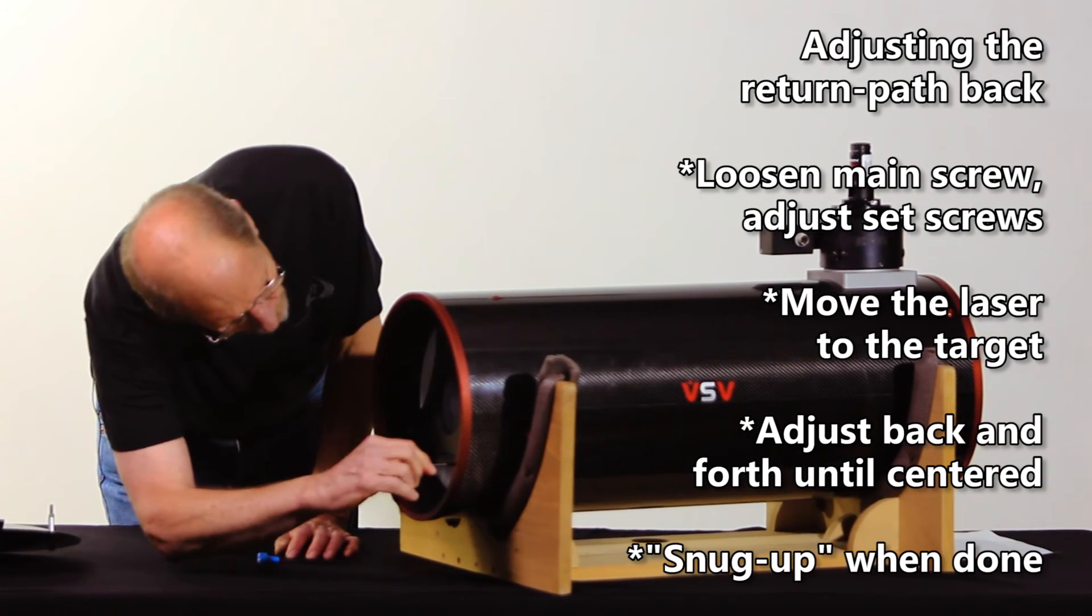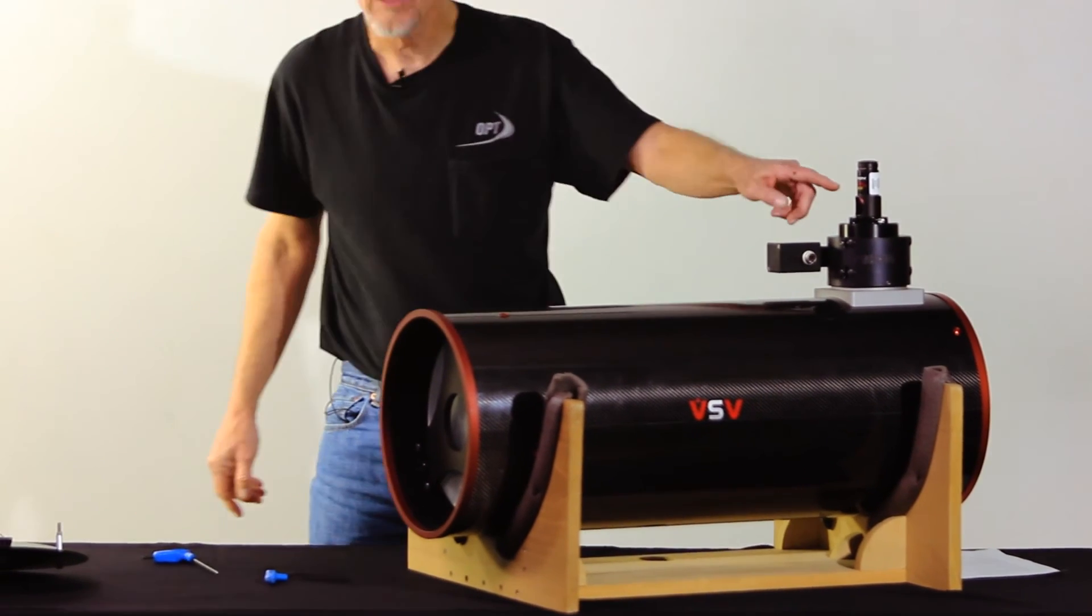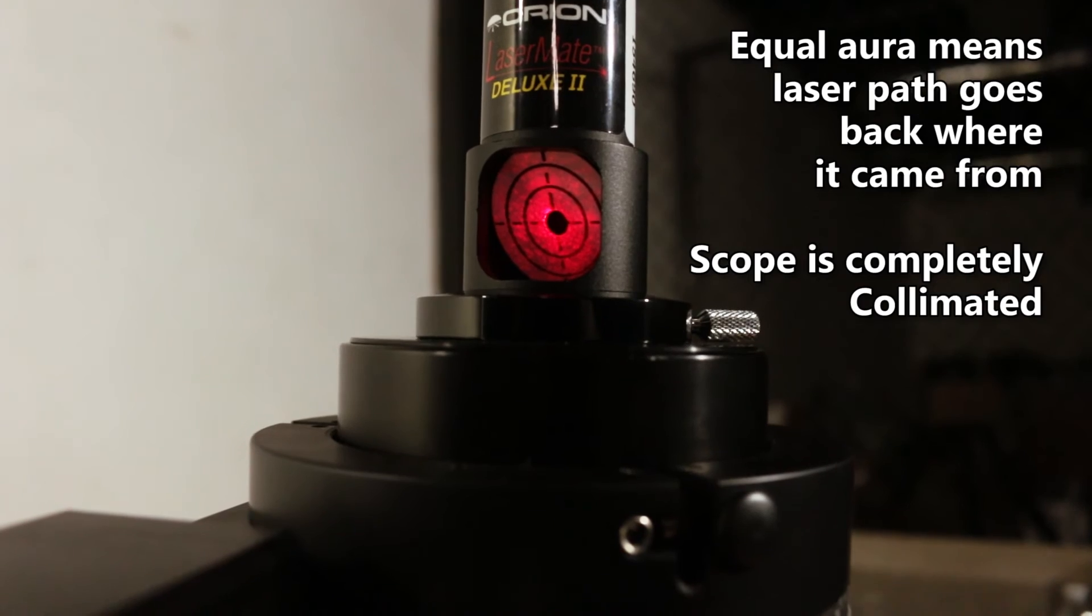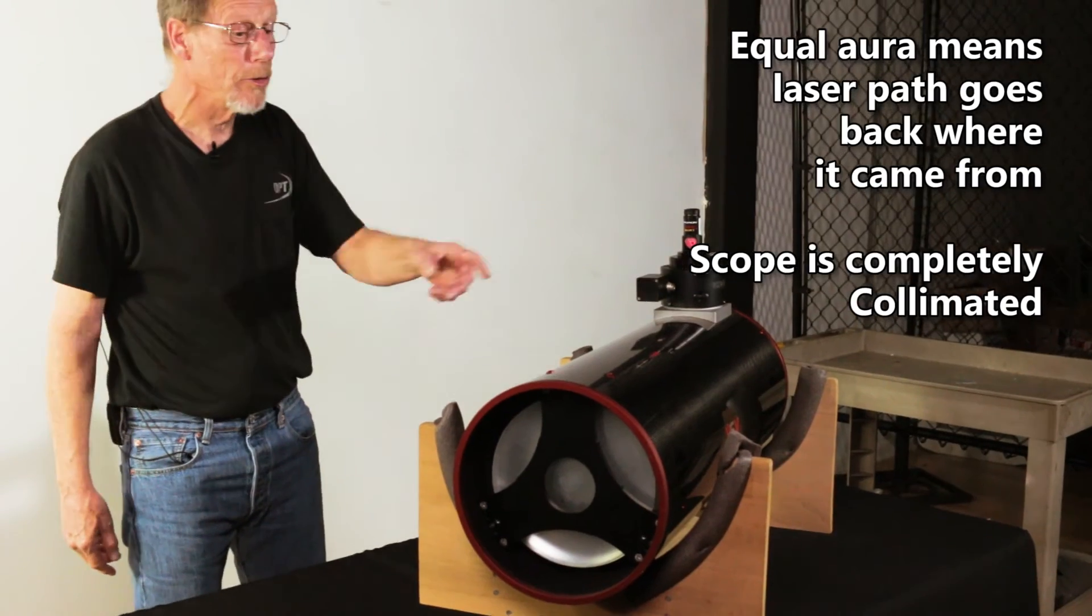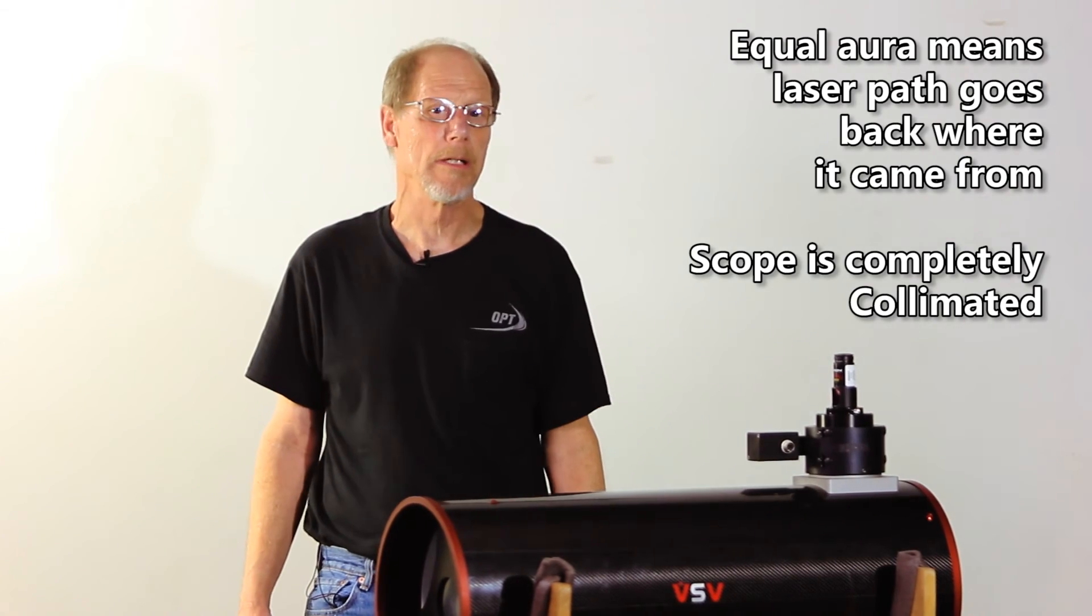Make sure to check your collimation as you're doing this. Make sure you don't knock anything off. And as you can see in our target, we have an equal aura around the center hole. So we know that the return path is now back where it came from. So this telescope is completely collimated.